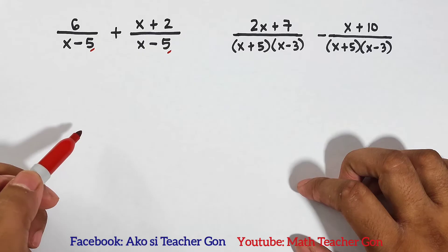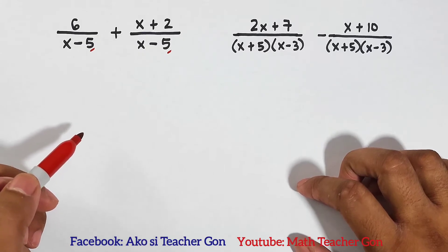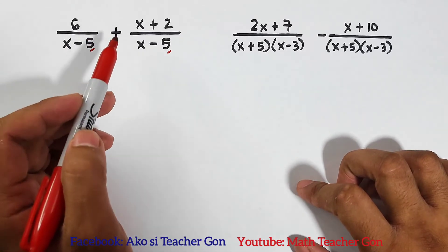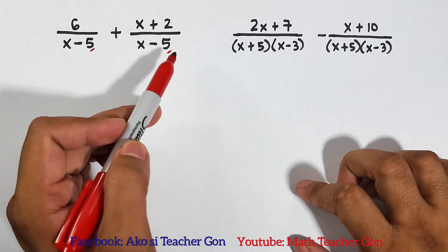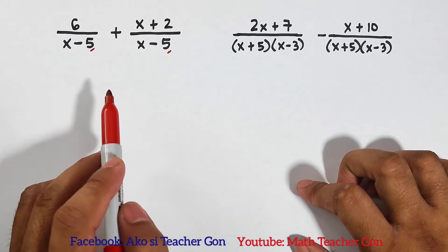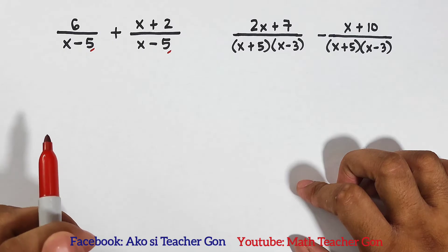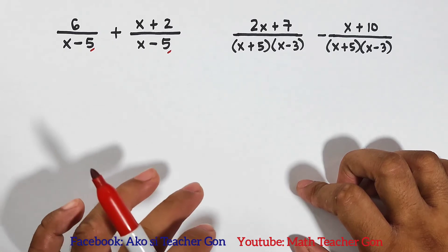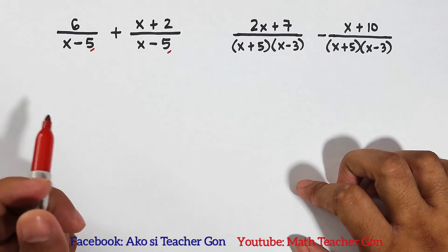So there are only three steps that we need to do. First, we will add the numerators, then copy the denominators. Second, we will combine like terms. And lastly, we will simplify the answer. So let's start.